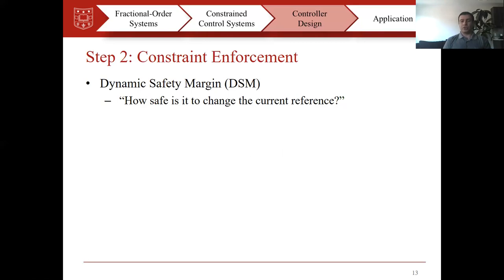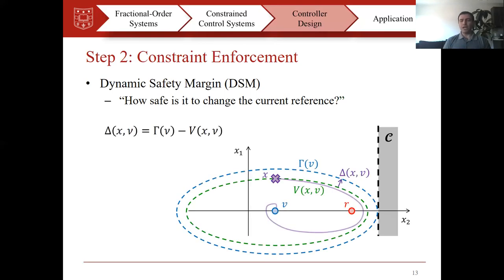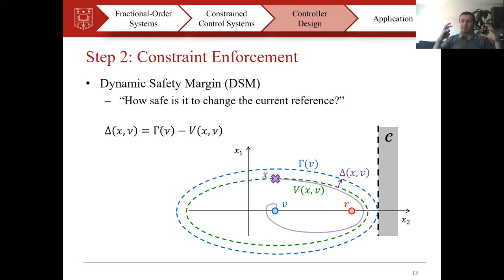The dynamic safety margin answers the question: how safe is it to change the current reference? It is a measure of safety. There are several methods to compute this measure, and in this presentation we use Lyapunov theory. Assume the current state of the system is a point x, and the green ellipsoid is the corresponding Lyapunov level set — an invariant set, meaning starting from x we converge to the equilibrium point and never exceed this level set. If we can find the biggest Lyapunov level set entirely contained in the constraint, the difference between that biggest level set and the current one can be used as a measure of safety.